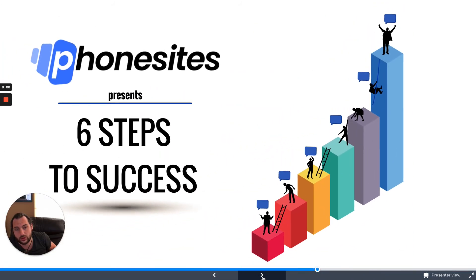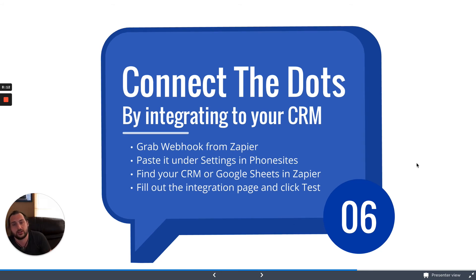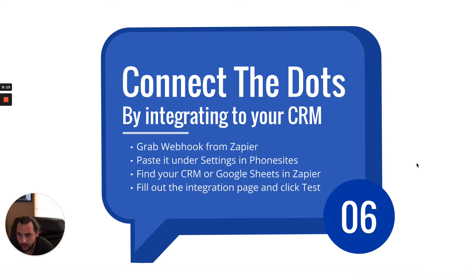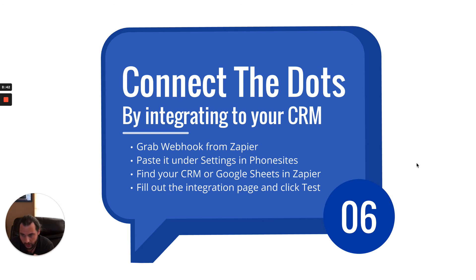Step five is connecting the dots. I could do a whole video on this one, and I will ultimately. The way you do it is you open up Zapier, select webhooks as the trigger — just type in webhooks and it'll pop up — select post, and it'll give you a link. Copy that link, go over to Phonesites, and paste it in settings where it says post webhook. Fill the form out so there's a lead there, then hit save.